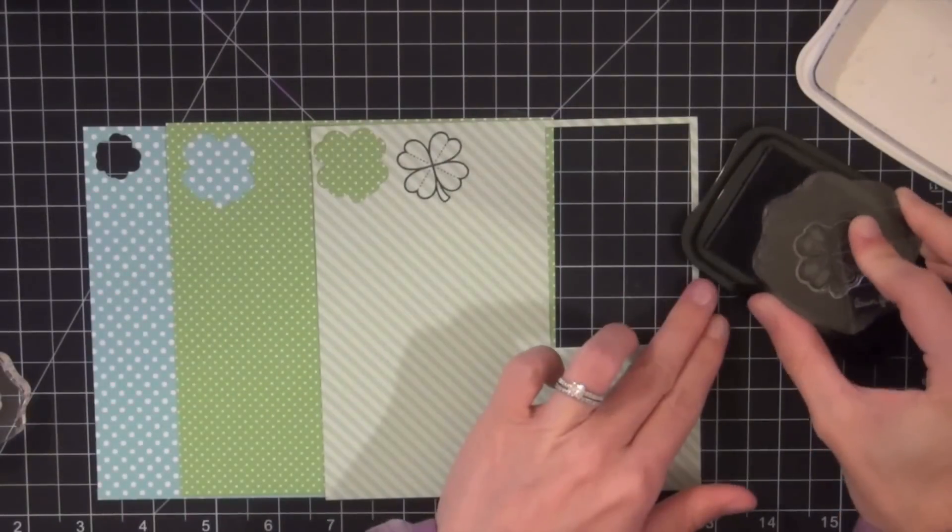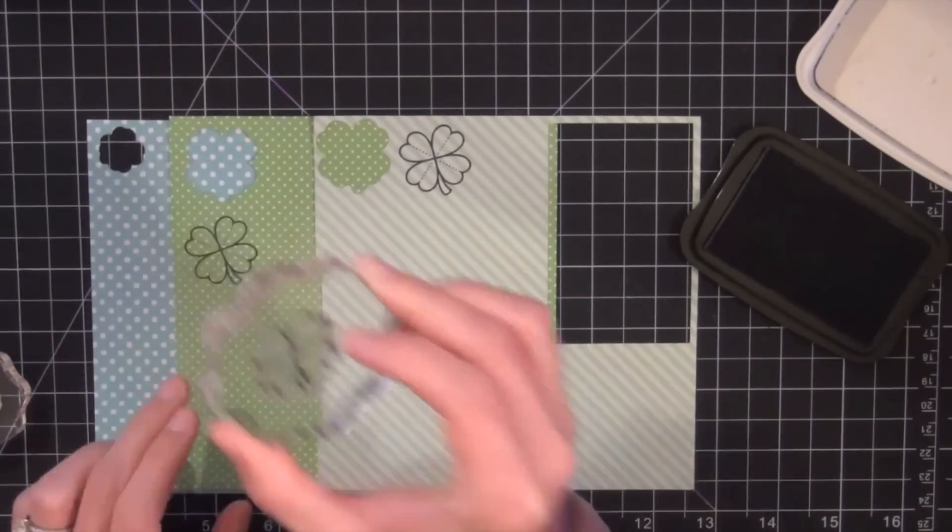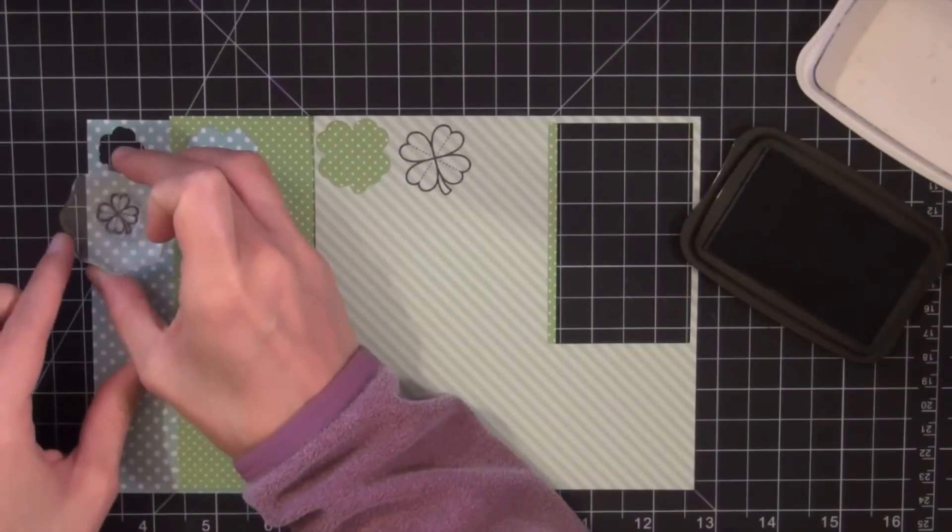And then once I decide on the patterns I'll go ahead and stamp out the large and small clover images with some memento tuxedo black ink and then I will use the coordinating dies and run that through my big shot.